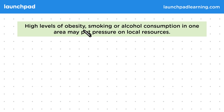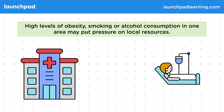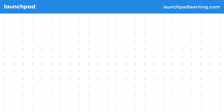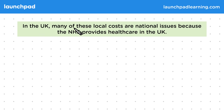High levels of obesity, smoking, or alcohol consumption in one area may put pressure on local resources. It requires time and money to provide healthcare, and this may put a strain on local resources such as hospitals. For example, there are often a limited number of hospital beds. In the UK, many of these local costs are national issues because the NHS provides healthcare.